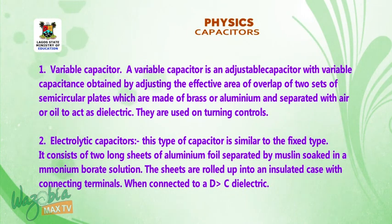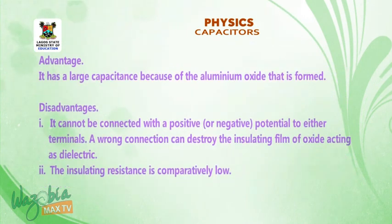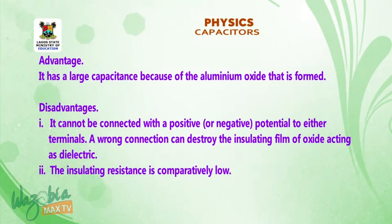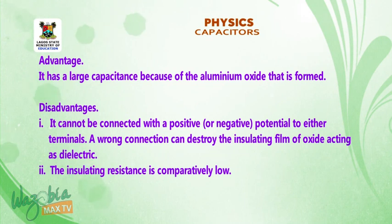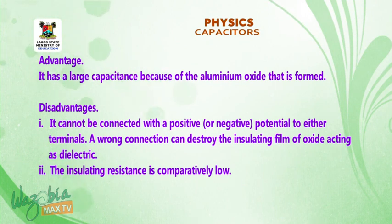When connected to a DC source, a dielectric forms. Advantage: it has a high capacitance because of the aluminum oxide that is formed. Disadvantage: it cannot be connected with a positive or negative potential to either terminal arbitrarily. A wrong connection can destroy the insulating film of oxide acting as dielectric.